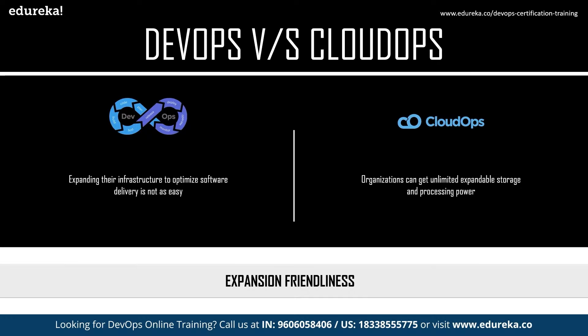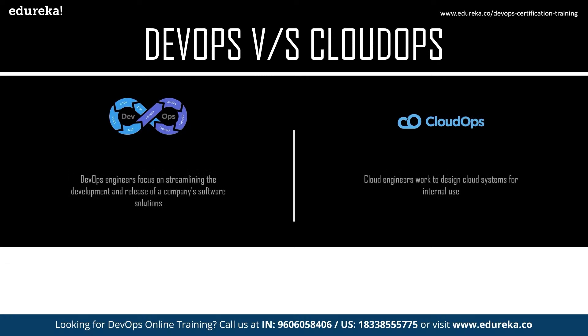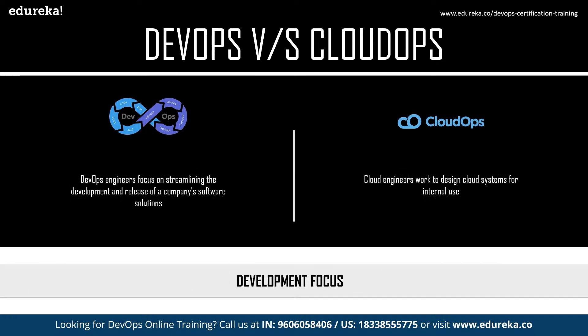The next difference is expansion friendliness. With cloud ops, organizations can get unlimited expandable storage and processing power as per their needs. But in the case of DevOps, expanding or upgrading the infrastructure to optimize software delivery is not as easy — it is potentially expensive and a complicated procedure. The next difference is development focus. Apart from cloud development, DevOps engineers also work with online applications and downloadable software, while cloud engineers work to design cloud systems for internal use.